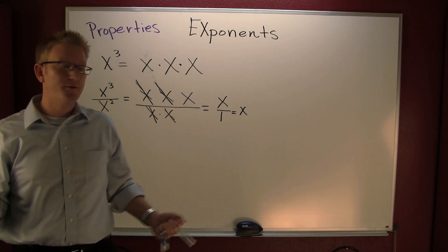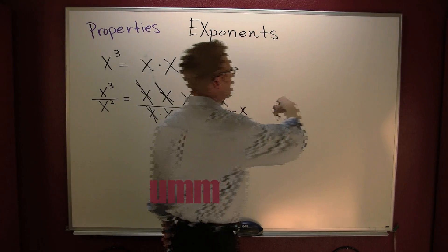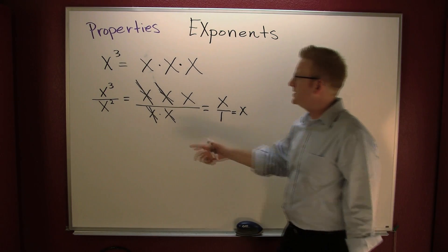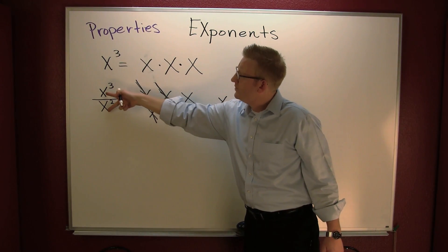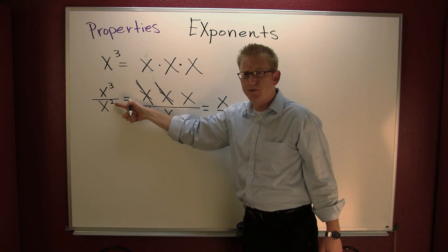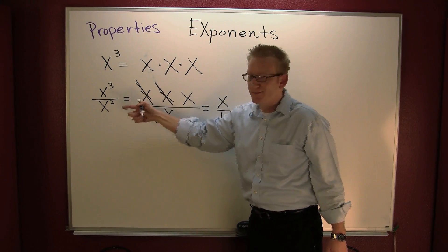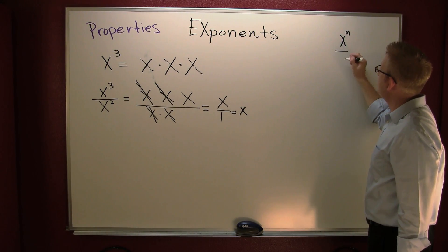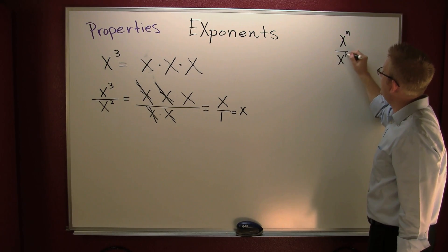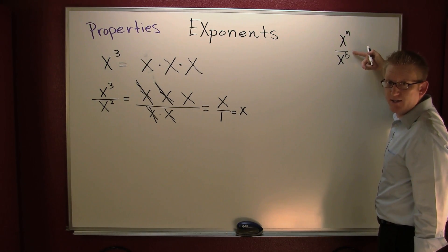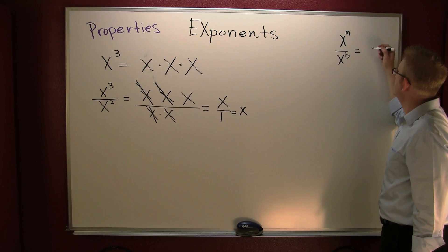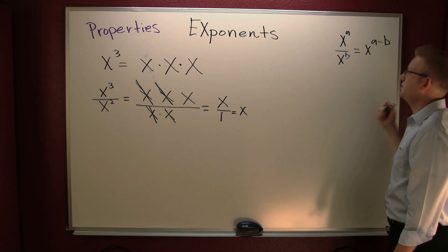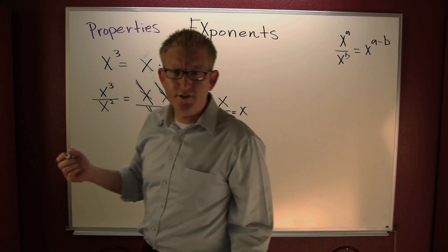So let's throw up that property. We have the same base and we're dividing — what do we do to their exponents? We subtract them. So if you have x to the a divided by x to the b, same base, dividing, this is going to be x to the a minus b.